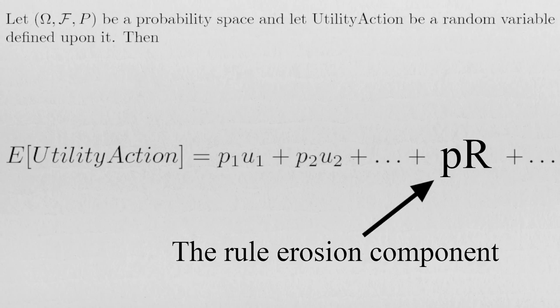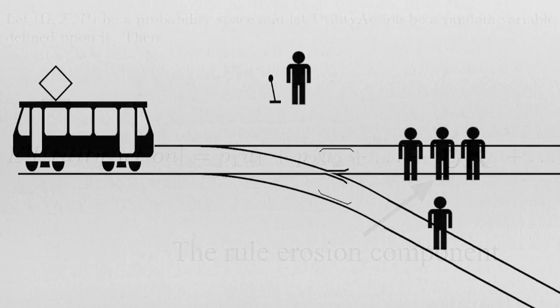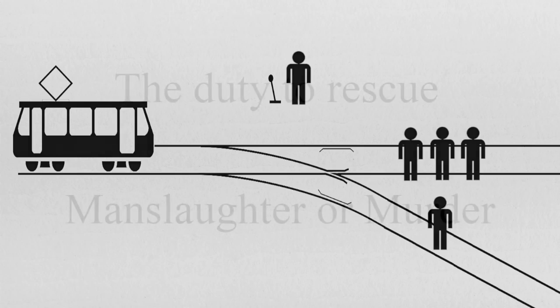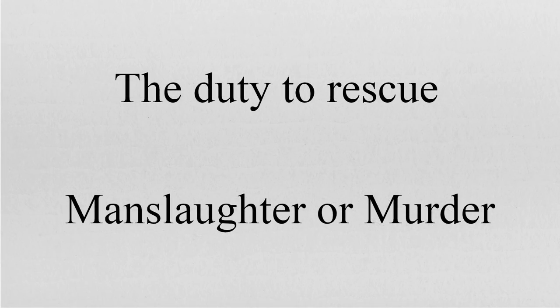Let's first apply our eudaimonic calculus in the standard trolley problem case. We quickly see that, as described, the situation is not as simple as choosing three lives instead of one. Indeed, for the purposes of the eudaimonic calculus there are two relevant societal rules: the duty to rescue rule and manslaughter or murder.